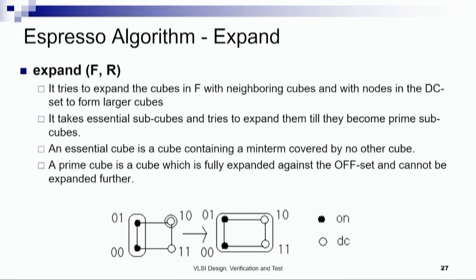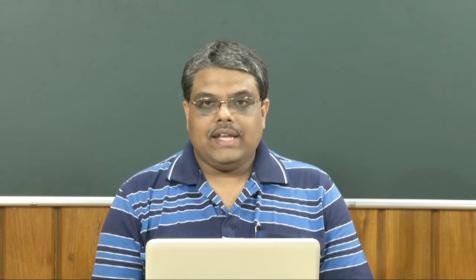Before looking at the Espresso algorithm in detail, we first look at each of its functions. The most important steps in the Espresso algorithm form a loop which repeatedly reduces, expands, and obtains an irredundant cover, until the cost is stabilized. The three most important functions are expand, reduce, and irredundant — we need to discuss these first before understanding the entire algorithm.